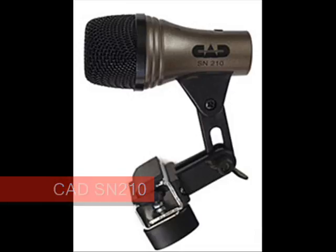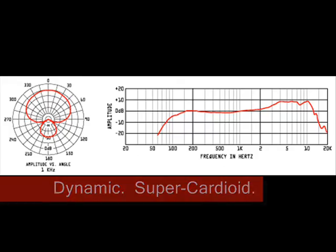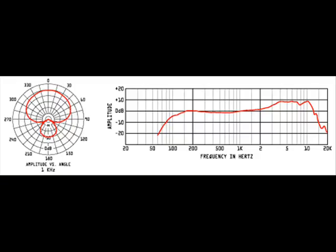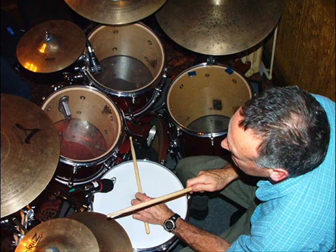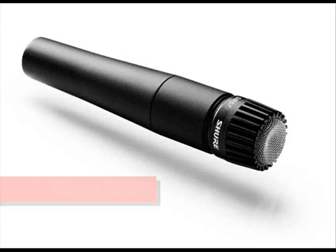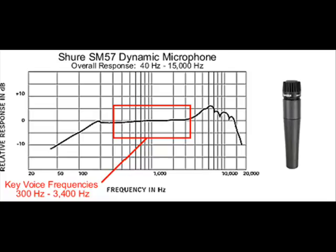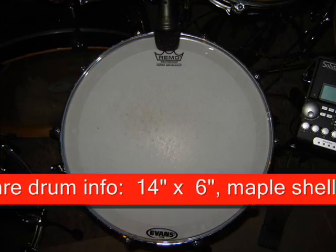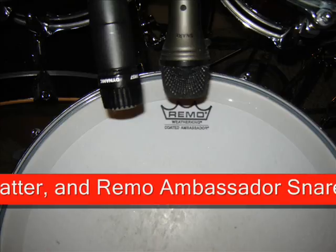The snare drum microphone is the CAD SN210 — a super cardioid dynamic microphone. Its frequency response is quite flat from about 150 Hz up to around 1,500 Hz, then there's a boost around 5,000 to 10,000 Hz before it drops off. The super cardioid pattern gives rejection from the back but more sensitivity on-axis, so you will get bleed from the hi-hat, kick drum, or adjacent toms. I've compared this with a Shure SM57, and the sound is quite reasonable — the CAD is roughly half the cost. I'm quite impressed with it.